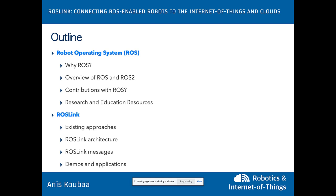The outline of my presentation is as follows. First, I'll introduce Robot Operating System because the Roslink protocol is based on it. I'll explain why I use ROS for robotics research and provide an overview of ROS 1 and ROS 2. I'll also cover our contributions and educational resources. The second part will cover the Roslink protocol — its existing approaches, architecture, message types, demonstrations, and real-world applications.